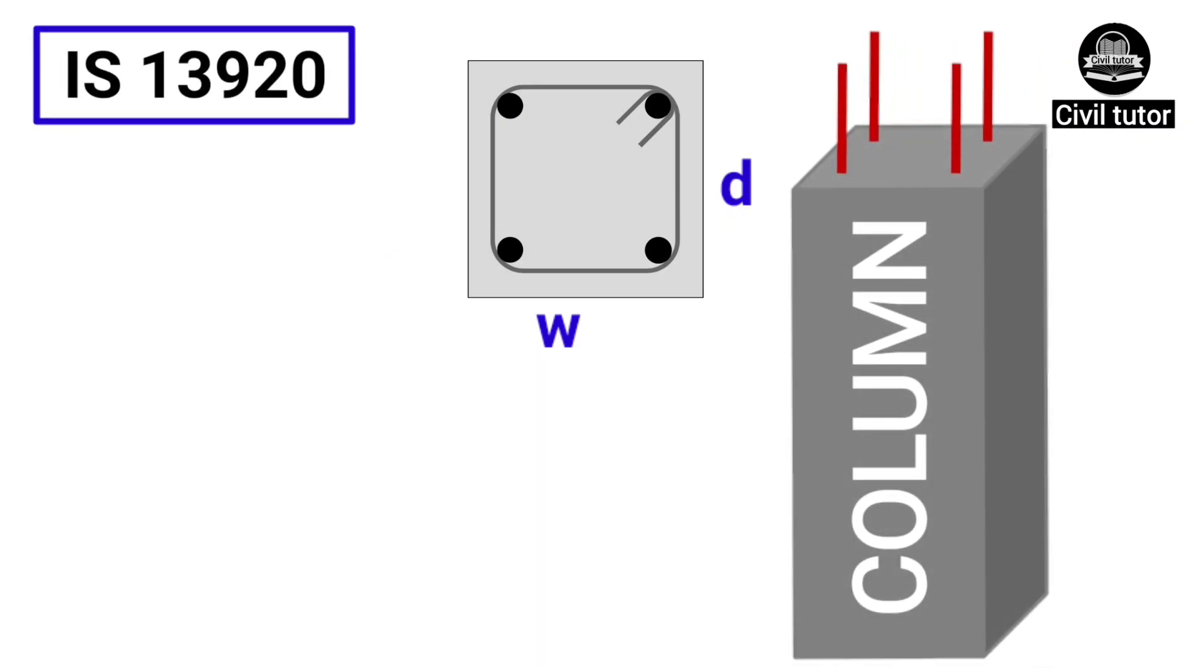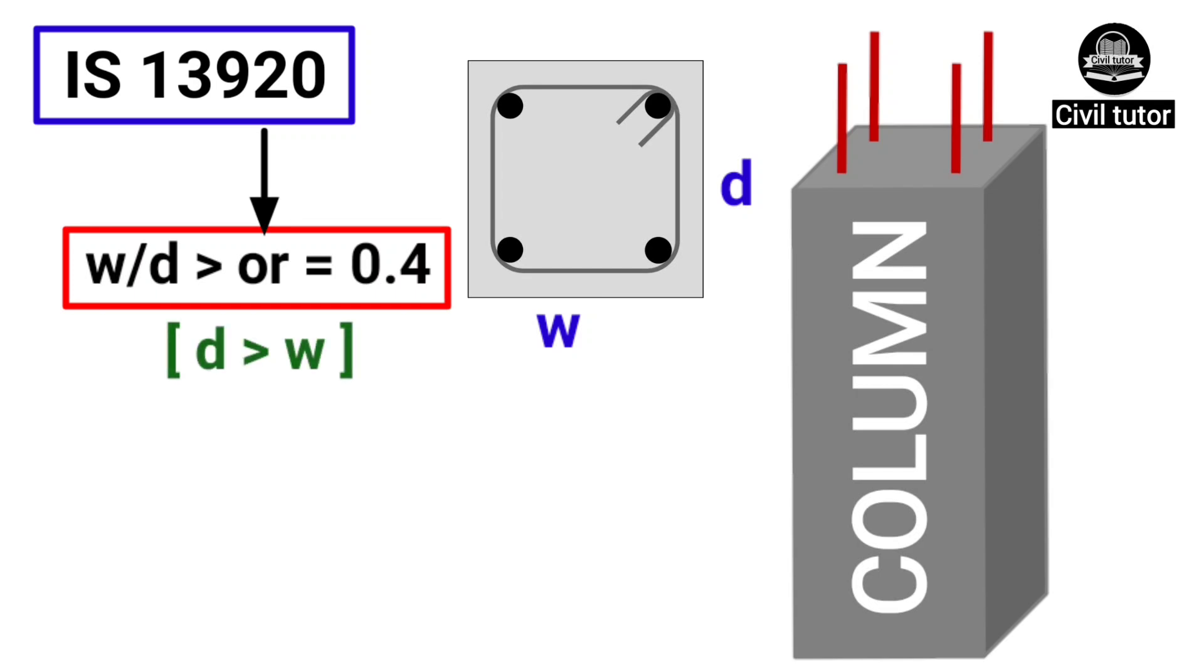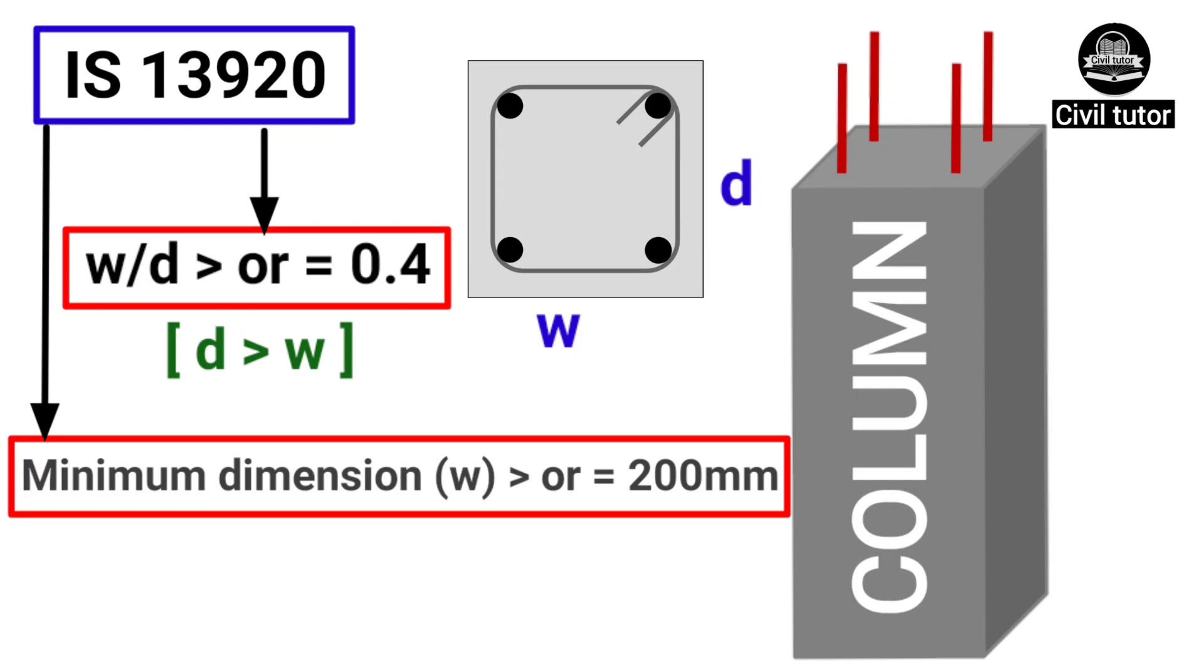As per IS 13920, the width to depth ratio of a column should be greater than or equal to 0.4 and the minimum dimension of the member shall not be less than 200 mm.